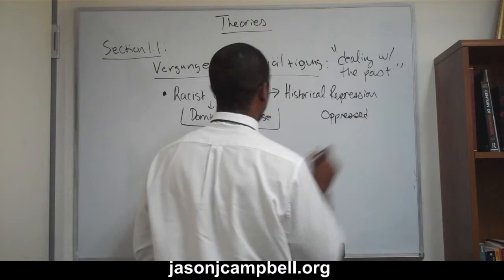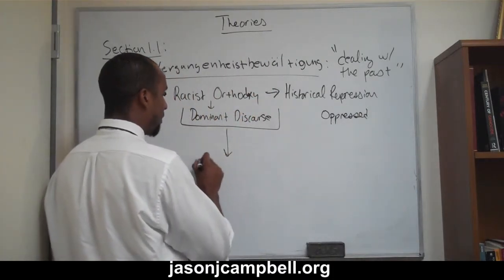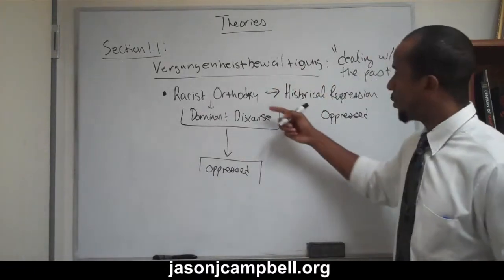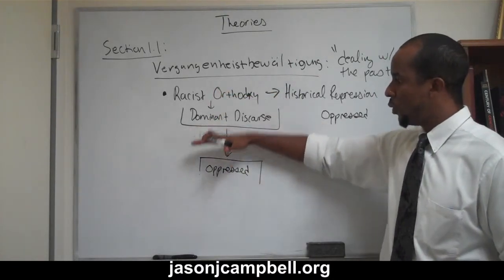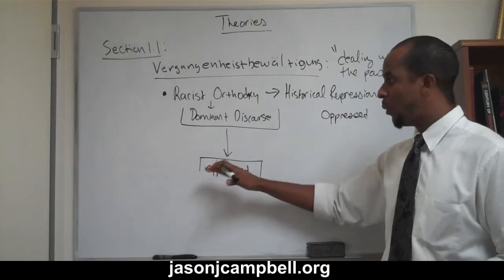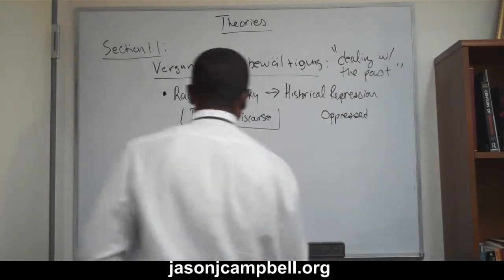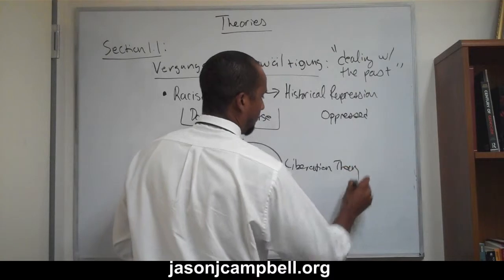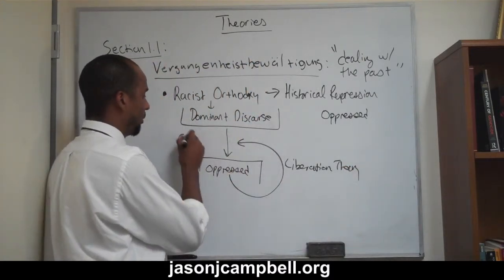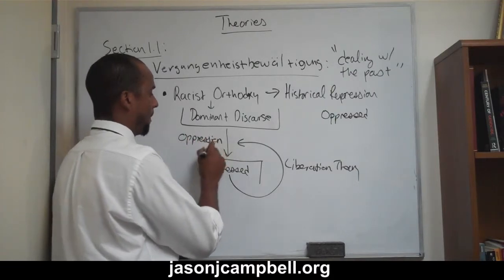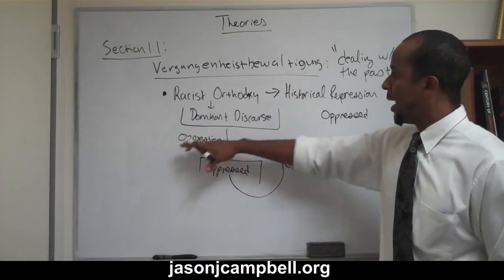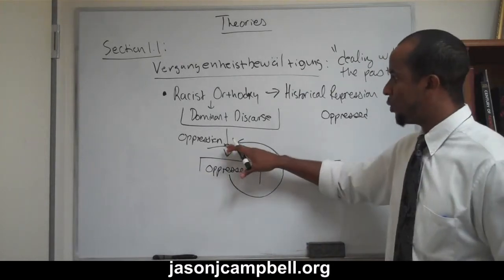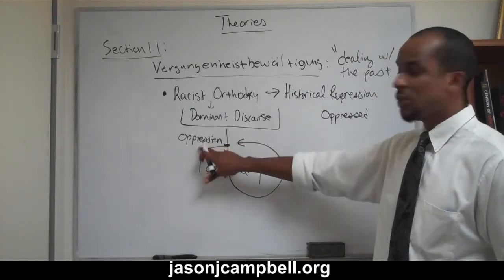The whole point of the dominant discourse is to continually oppress the oppressed. So the dominant discourse — this racist orthodoxy — is set in motion to oppress the oppressed people. And what ends up happening is that liberation theory comes as a consequence of this oppression. So the dominant discourse oppresses, and as a consequence, the oppressed attempt to create a counter-narrative to their oppression.